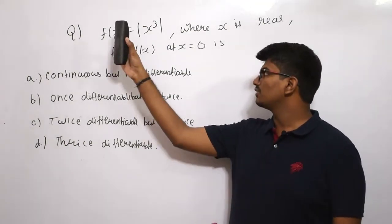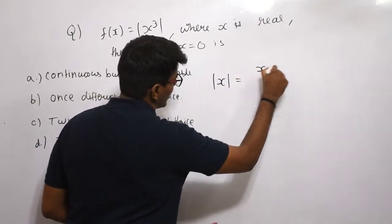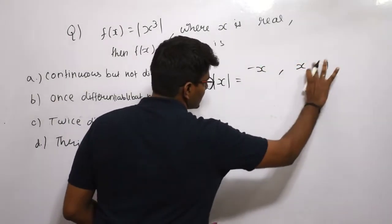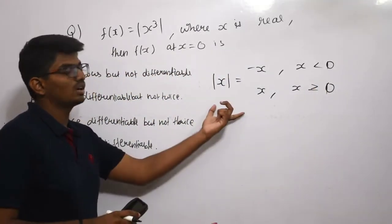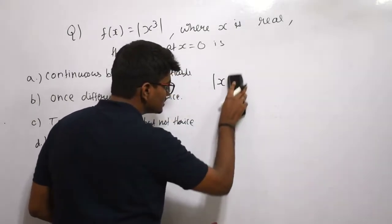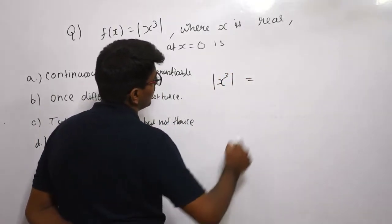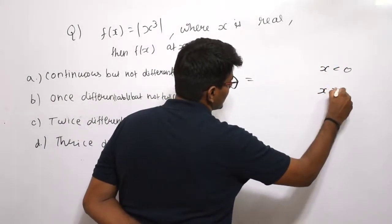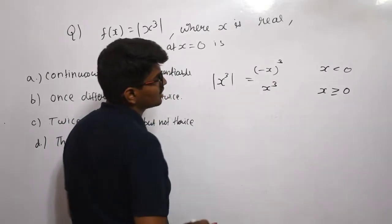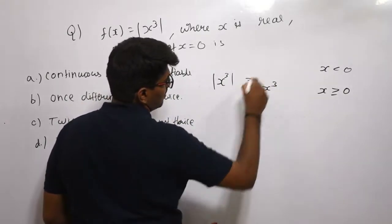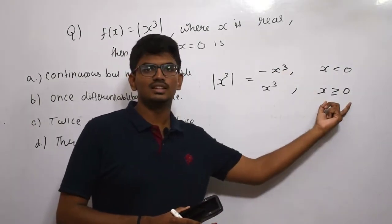The next problem is f(x) = |x³|. We already discussed the modulus function: it equals x if x ≥ 0 and −x if x < 0. So for |x³|, when x < 0 we get −x³, and when x ≥ 0 we get x³. Our function is therefore f(x) = −x³ if x < 0, and x³ if x ≥ 0.